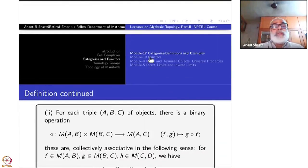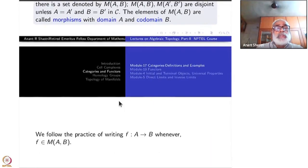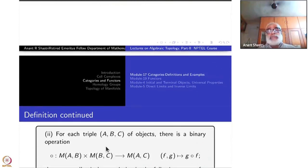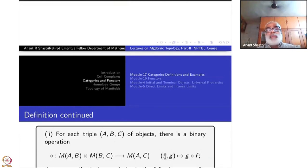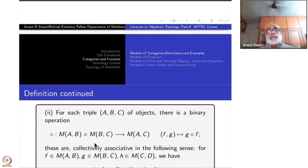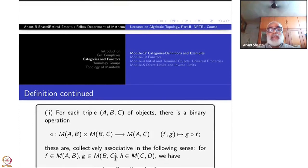The definition continues: for a triple of objects A, B, C, there is a binary operation from M(A, B) × M(B, C) to M(A, C), written as (F, G) ↦ G∘F. These binary operations, one for each triple, are collectively associative: for F: A→B, G: B→C, H: C→D, we have H∘(G∘F) = (H∘G)∘F. The compositions may not be defined unless the arrows match, just as in the case of sets.